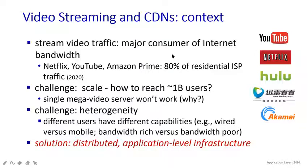The first point says stream video traffic. What is happening here with stream video traffic? Suppose you are watching a video on YouTube, Amazon Prime, or Netflix — what exactly happens there? If you are using the internet directly, it will consume more internet bandwidth.